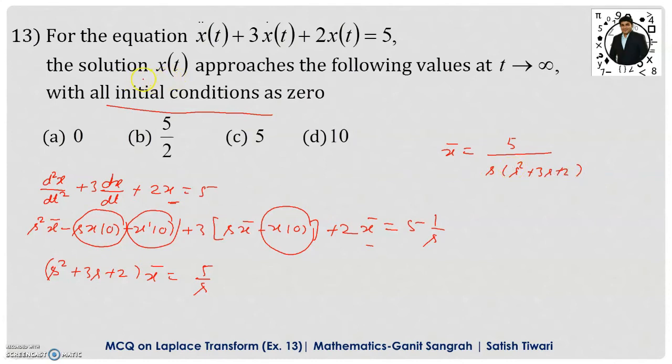Now we have to find out the value of the given solution x(t) when t tends to infinity. So t is tending to infinity. For this we will apply the final value theorem.